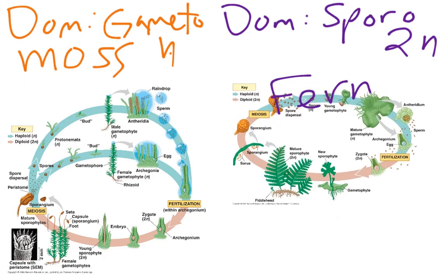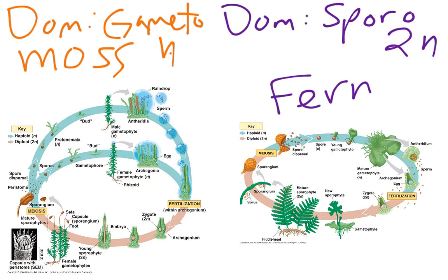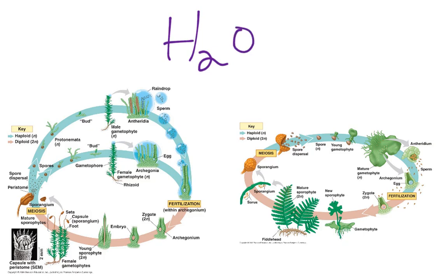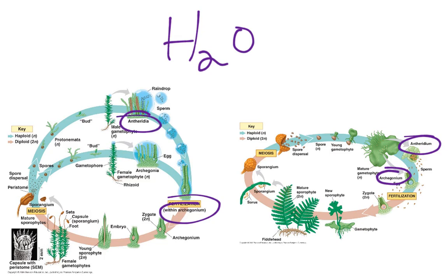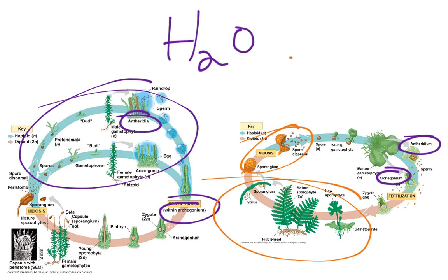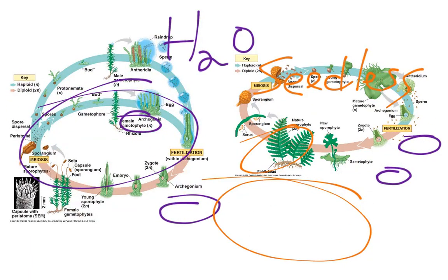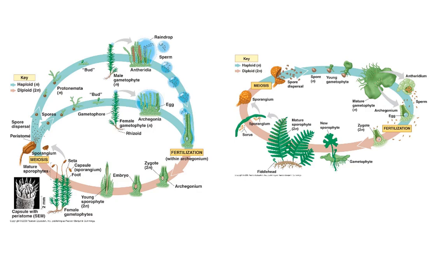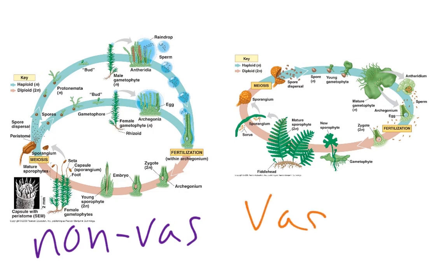Some similarities they are going to have is they're both going to depend upon water for fertilization, because the sperm will have to actually swim. The nomenclature for everything is the same — we have archegonia and anthridia in both of them. But the major difference in their life cycle is really just simply the dominant generation. In the mosses, the dominant generation is the gametophyte; in the ferns, the dominant generation is the sporophyte. Also, a major difference is that mosses are non-vascular and the ferns are vascular.